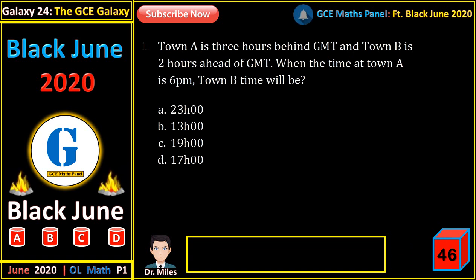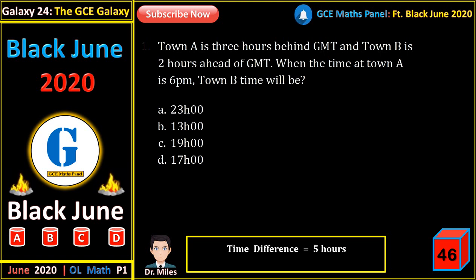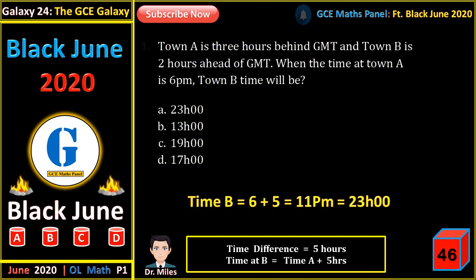Town A is 3 hours behind GMT and town B is 2 hours ahead of GMT. When the time at A is 6 p.m., the time at town B will be? The time difference between A and B is 5 hours. The time at B always equals the time at A plus 5 hours. So the time at B is 6 p.m. plus 5 hours, giving 11 p.m. In the 24-hour clock, that is 23:00 hours.